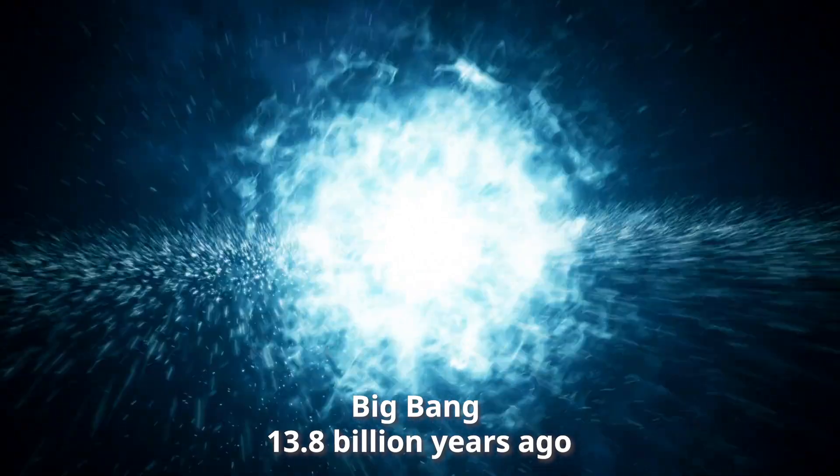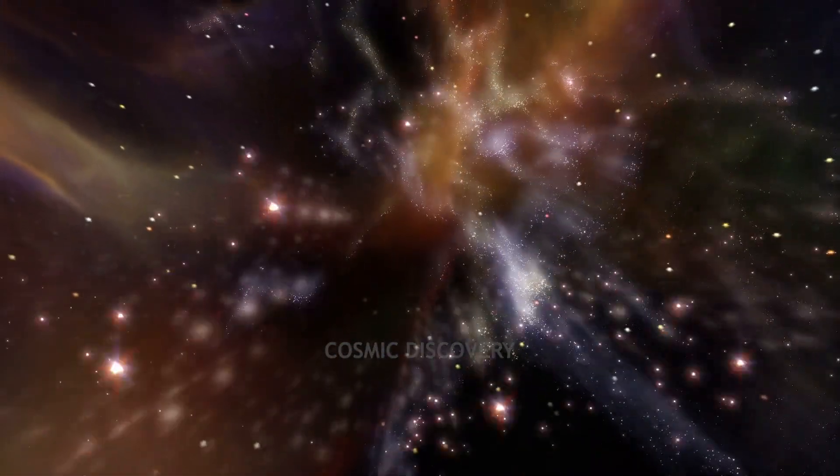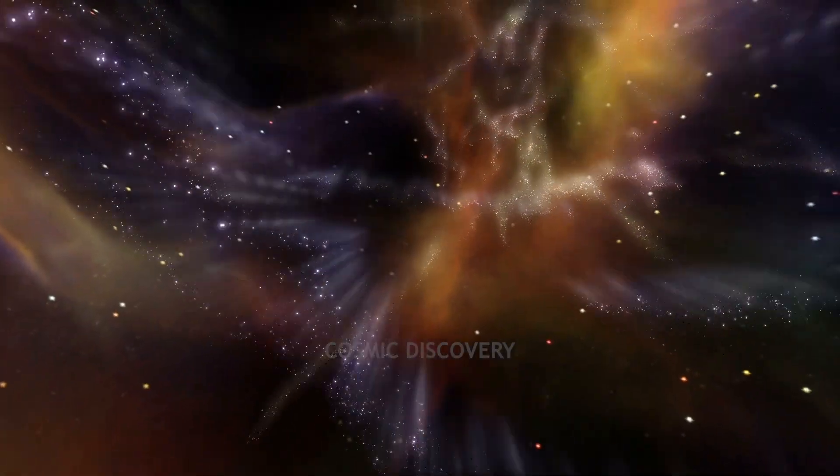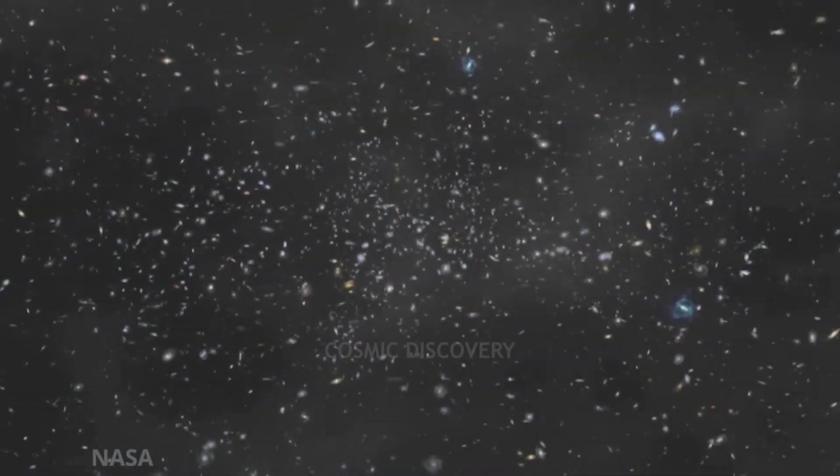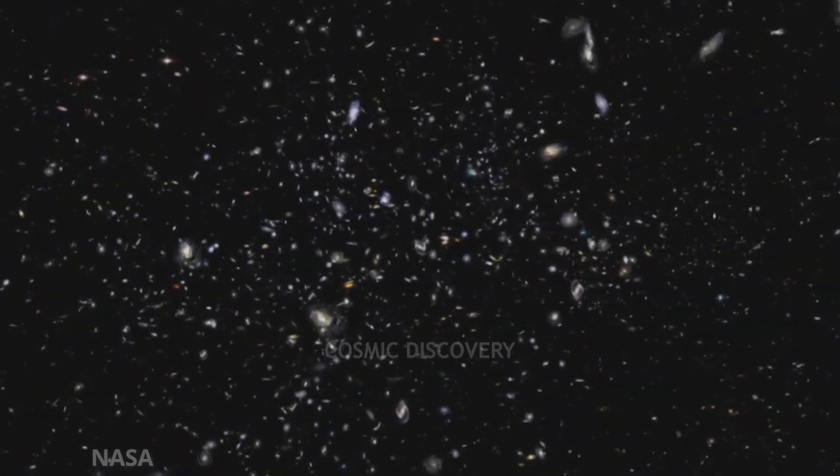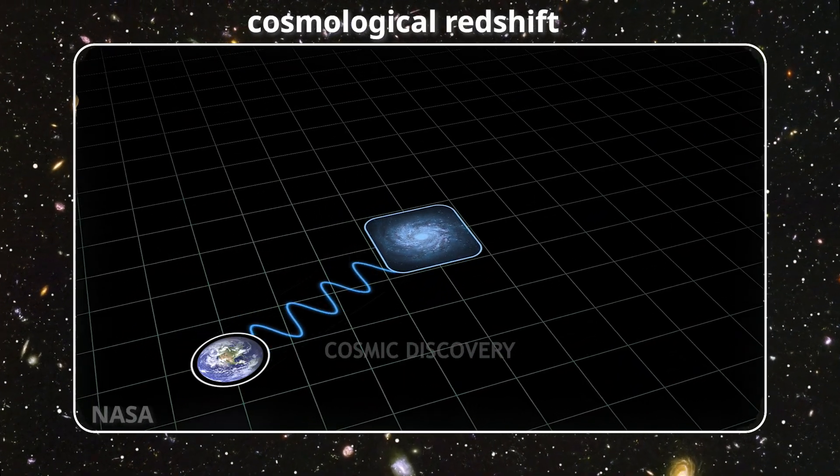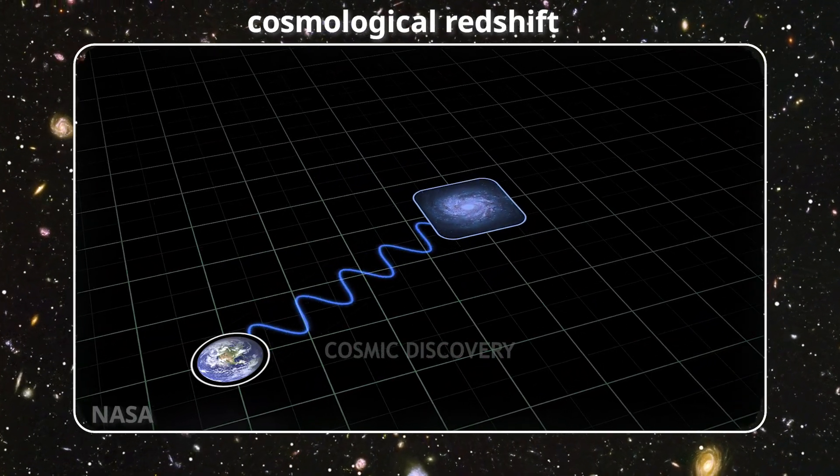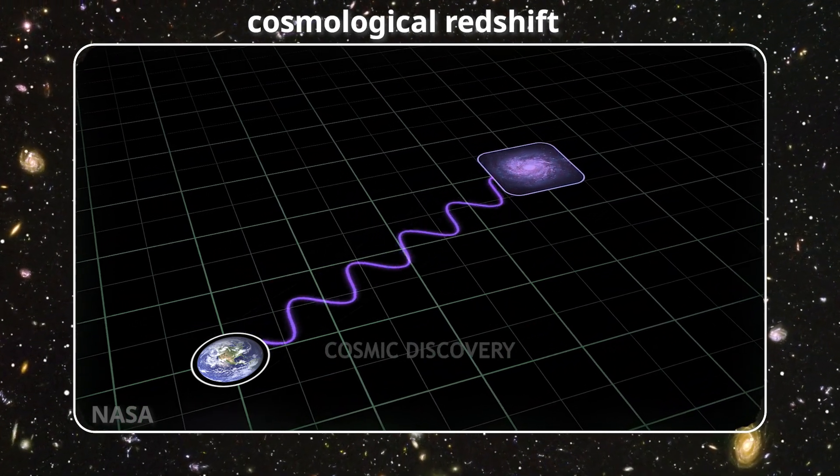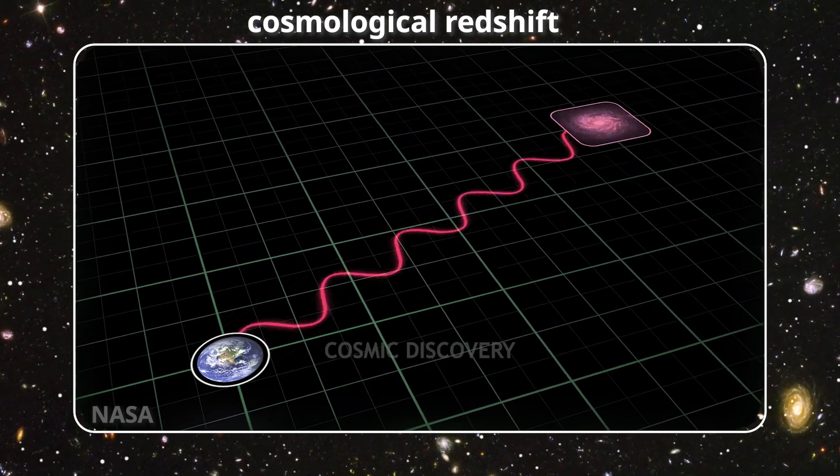As per the widely accepted cosmological model, the Big Bang occurred roughly 13.8 billion years ago, marking the beginning of the universe's continuous expansion. This expansion entails the gradual distancing of massive objects from one another, including galaxies beyond our Milky Way. To gauge a galaxy's distance, scientists utilize a concept known as cosmological redshift. In simple terms, the greater the redshift, the farther away the galaxy is from us.